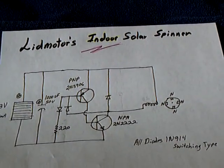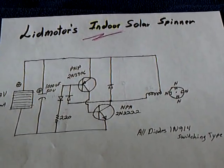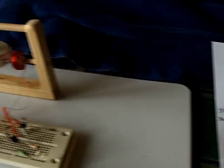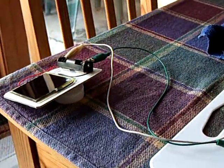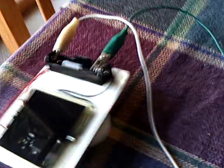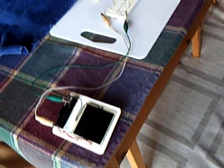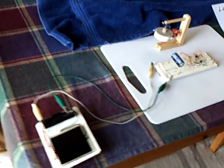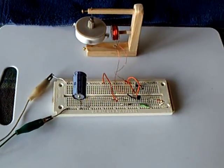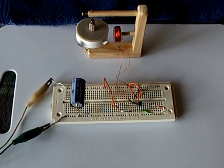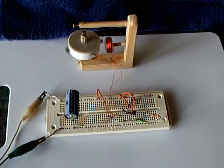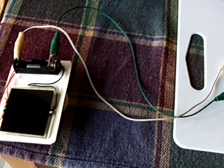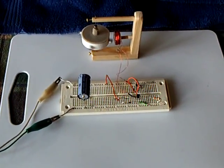This is Lidmotors indoor solar spinner. The thing works quite nicely inside the house in indirect solar light. Thanks for watching folks, I'm still working on this. I haven't got the circuit exactly right, but at least I have something running on its own on solar energy inside the house. Thanks.